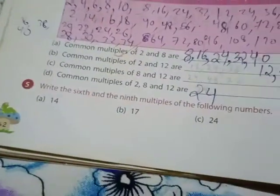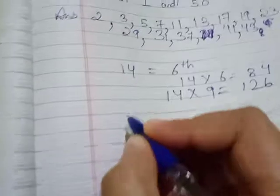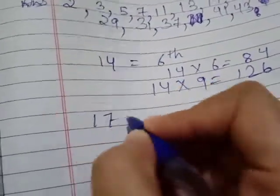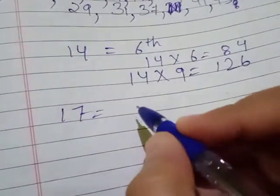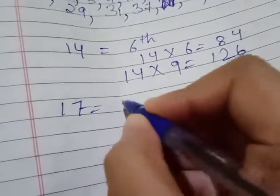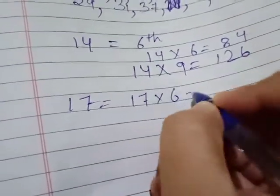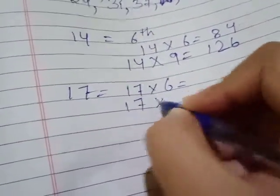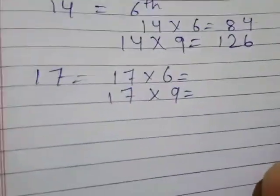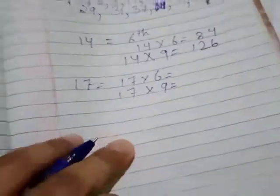After 14, what is the next one? That is 17. Similarly, you have to write 17, 6th and 9th. So 17 into 6, then 17 into 9. Can you do it on your own? Yes, you can complete it.